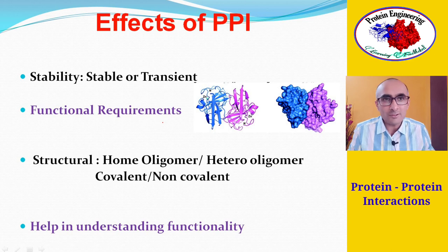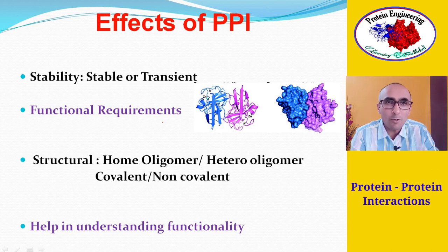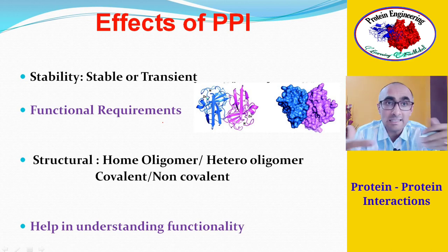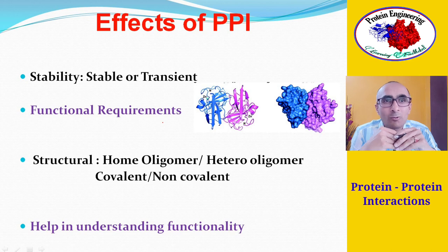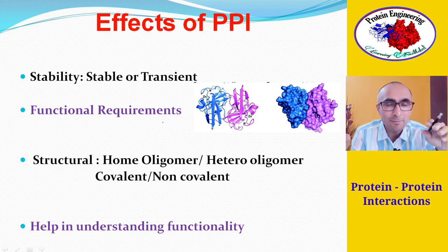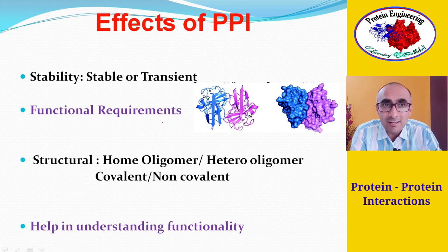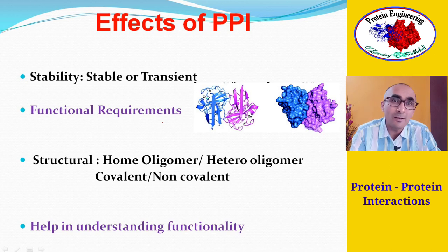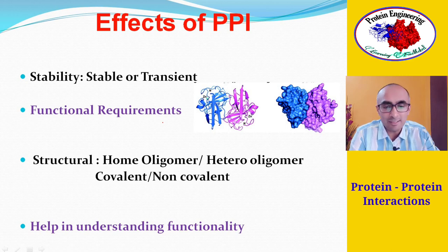Due to protein-protein interaction, a protein becomes more stable. Alone, the protein may not be stable, but when it associates together, the thermodynamic stability is enhanced. For example, intrinsically disordered proteins, when alone, don't have a proper 3D structure and their stability is less. When they associate with their receptors, they become more stable and acquire a more defined secondary and tertiary structure. That stability could be for a longer duration or could be transient.